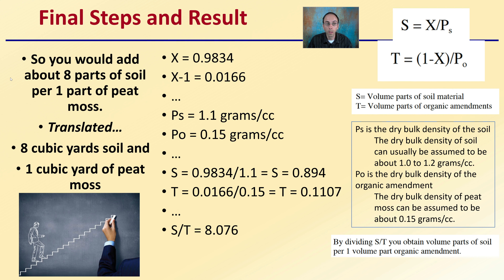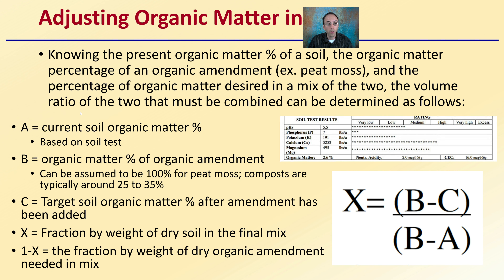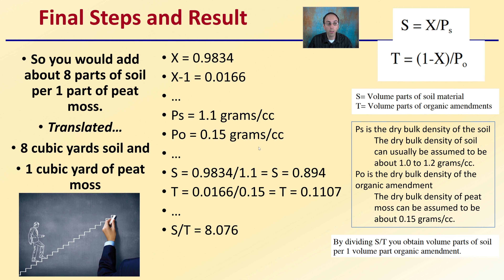That means you would add about eight parts of soil per one part of peat moss — or eight cubic yards of soil to every one cubic yard of peat moss — to reach the target of 5.0% organic matter from the original 3.4%. You can take your own soil test report, apply your A, B, and C values to this example, and calculate exactly how many cubic yards to purchase to hit your target organic matter without overbuying or underbuying. This is a lot better than eyeballing it, so take a little time to go over this — it'll be worth it in the end.